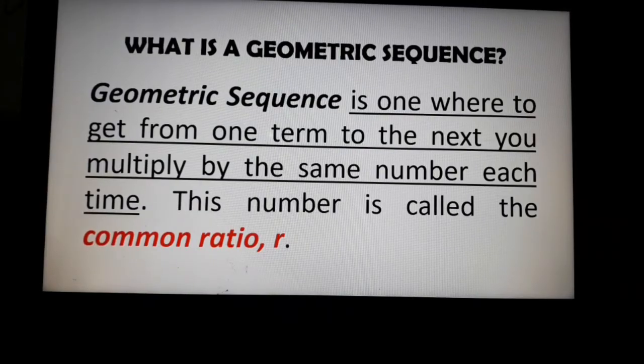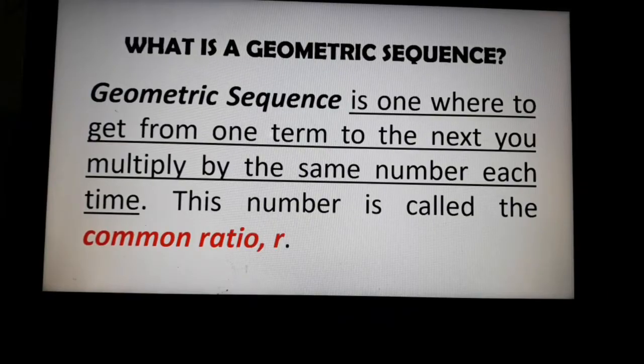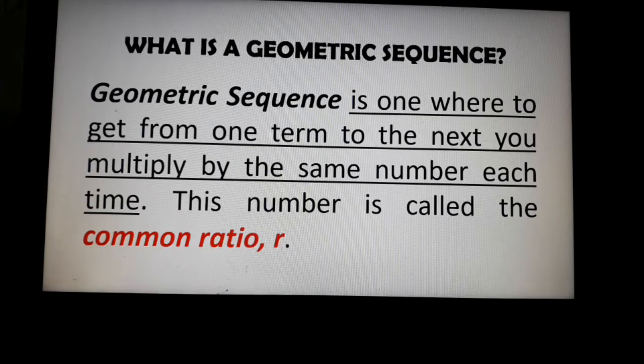Going back to the definition of geometric sequence, geometric sequence is one where to get from one term to the next, you multiply by the same number each time. The number is called the common ratio. So again, to know if the sequence is geometric sequence, there must be a common ratio.